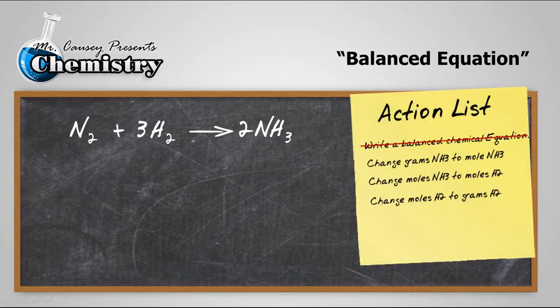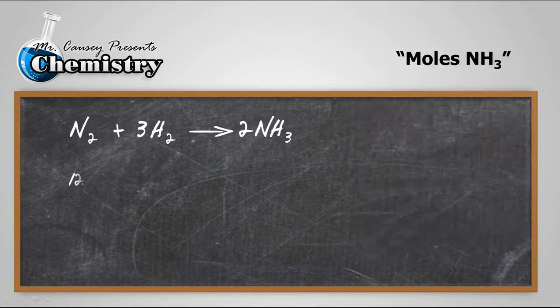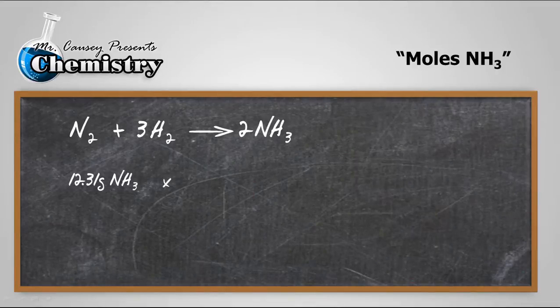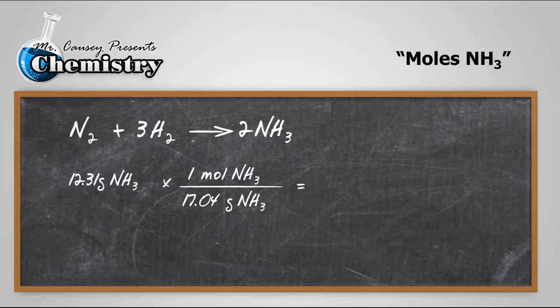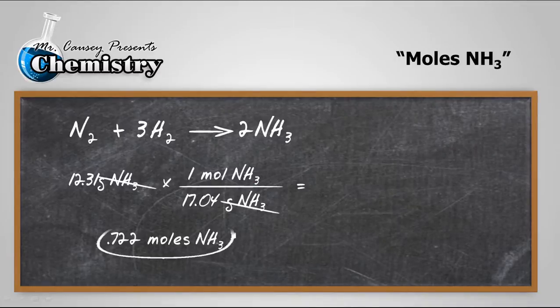Let's go to the action list again and our second thing. Change grams of ammonia to moles of ammonia. In order to do that, I need to find out what molar mass is. The molar mass is 17.04 grams of NH3. If you don't know how to calculate that, I have a video for that. Go watch it. That's one of my assumptions in this situation. Let's plug and chug. We get 0.722 moles of ammonia with our sig figs.